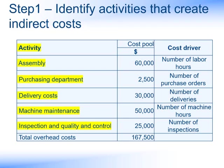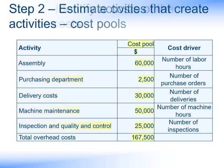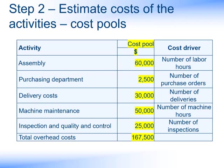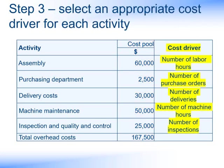For step one, we've identified the activities that create the indirect or production overhead costs — activities such as assembly, purchasing department, delivery costs, machine maintenance, and inspection and quality control. These are all typical activities within the manufacturing process. Next, we need to estimate the cost of these activities, which could be done from either historical data, forecast forward, or based on forecasted volumes. Then we need to decide a cost driver that's appropriate for each particular activity. So assembly, because it's people putting the products together, the logical basis might be labour hours. The logical basis for the purchasing department costs would be the number of purchase orders raised. Delivery costs use the number of deliveries, machine maintenance the number of machine hours, and inspection and quality the number of inspections — all logical bases on which to allocate the costs.